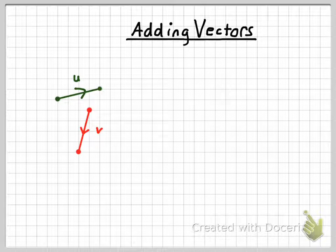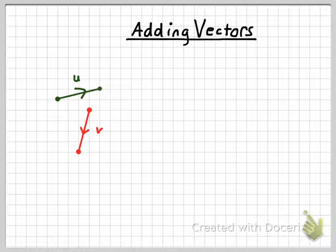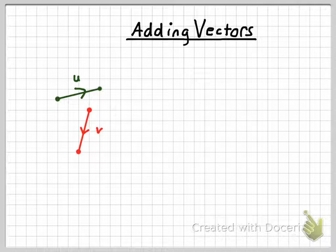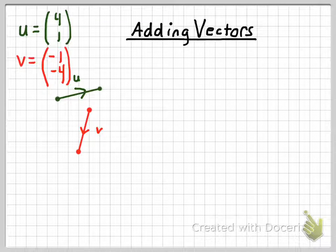On screen I have a couple of vectors, u and v, graphed out. I'm going to write down the component or column vector form of each as well.